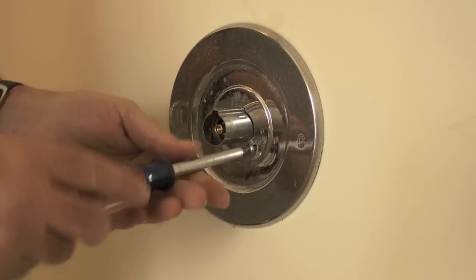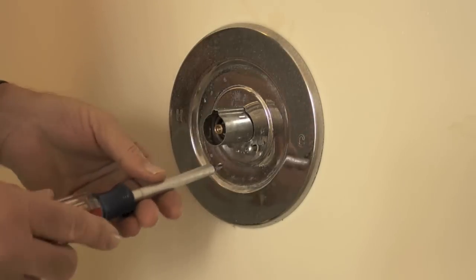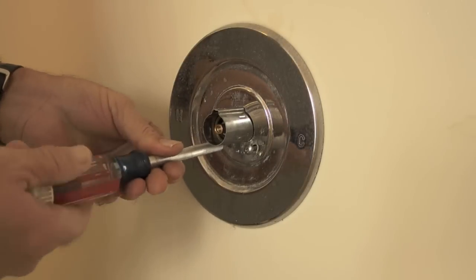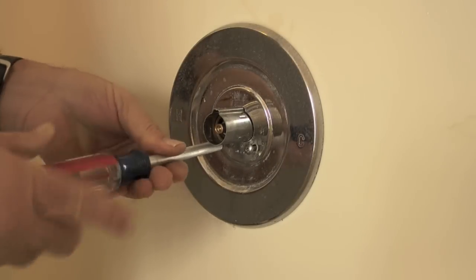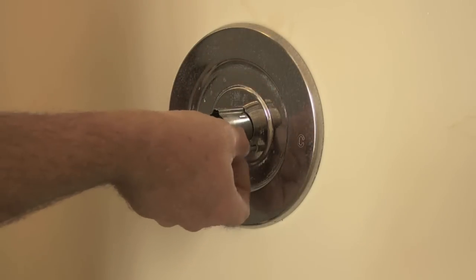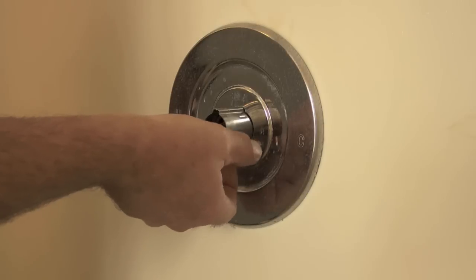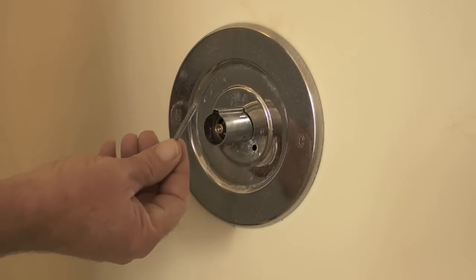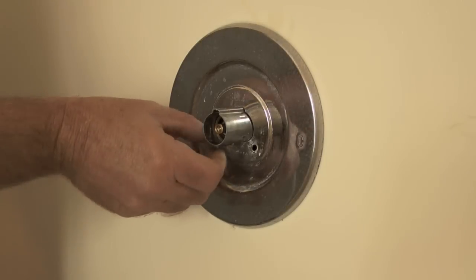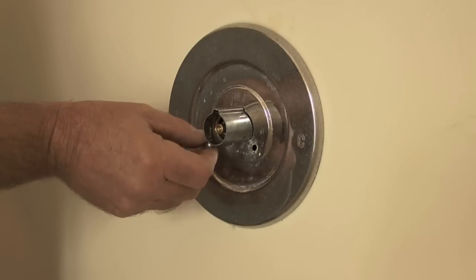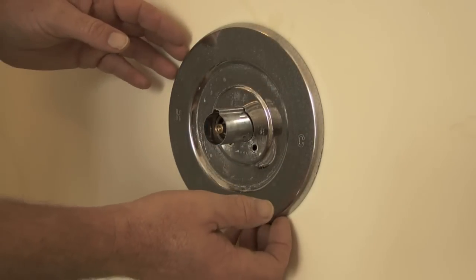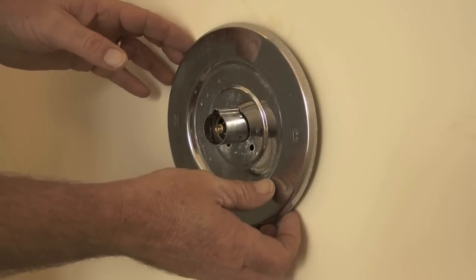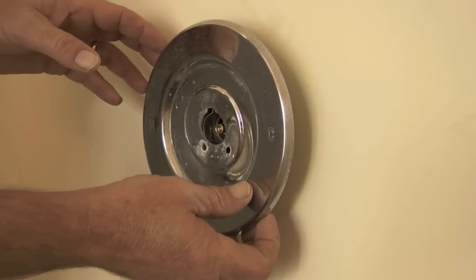Next, I will remove the escutcheon plate by first removing the two screws that are towards the center of the plate, then I will pull straight out on the escutcheon plate to remove it.